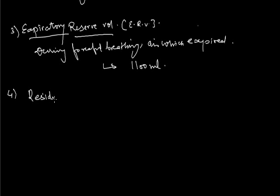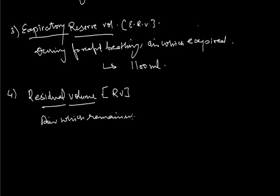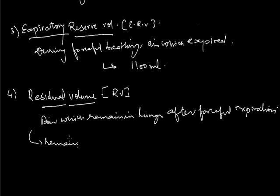Next is Residual Volume — the amount of air which remains in the lungs after forceful expiration. Even after a person performs maximum forceful expiration expelling 1100 ml, some air always remains inside the lungs. The lungs are never completely empty, and this residual volume is approximately 1200 ml.